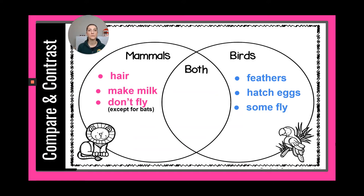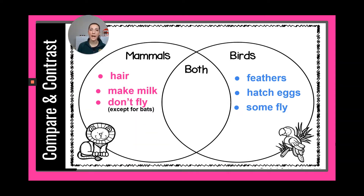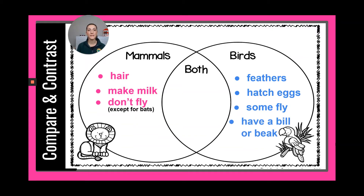Some examples of birds that don't fly are penguins, ostriches, and the rhea (spelled R-H-E-A), among others. Now there's something else birds have that mammals do not — a bill or a beak. They're synonyms. Birds have a bill or a beak; mammals do not.